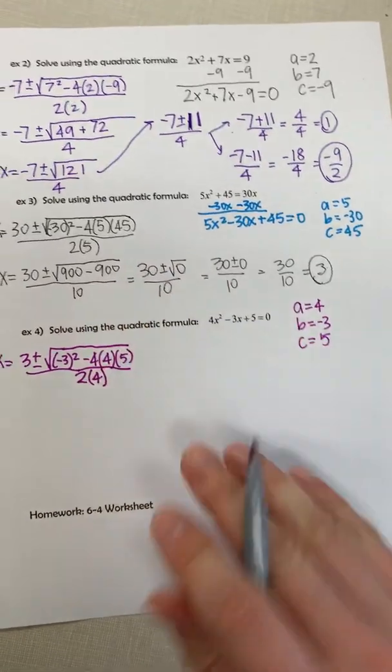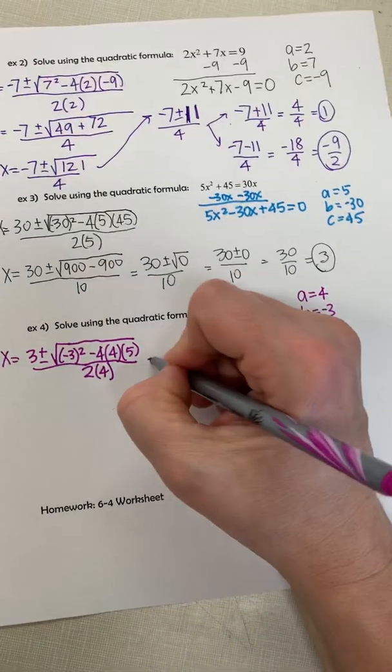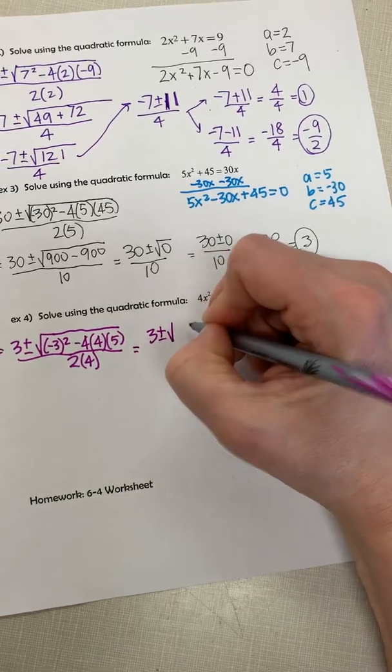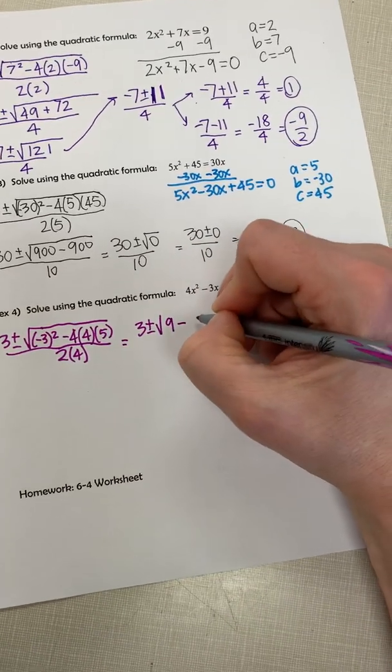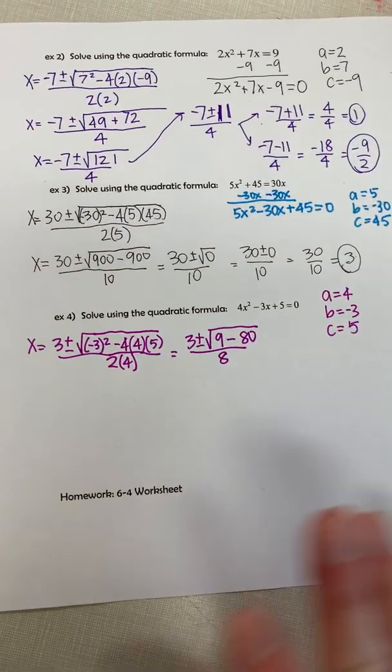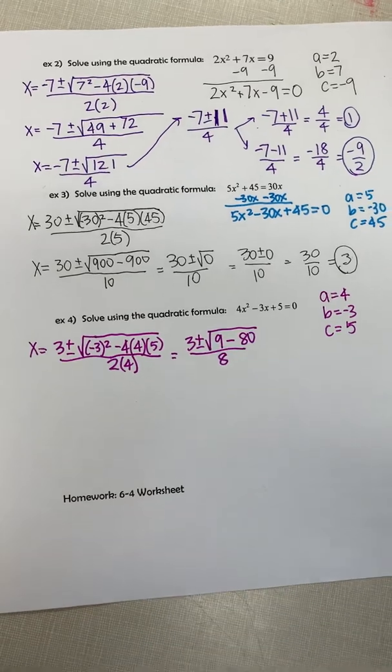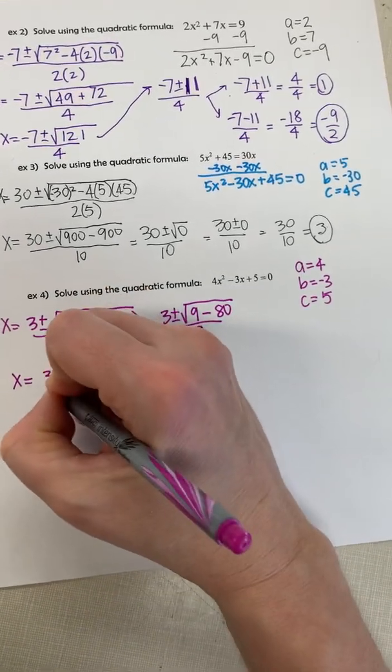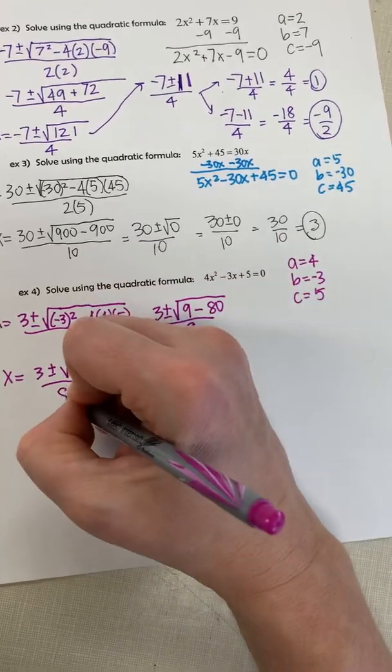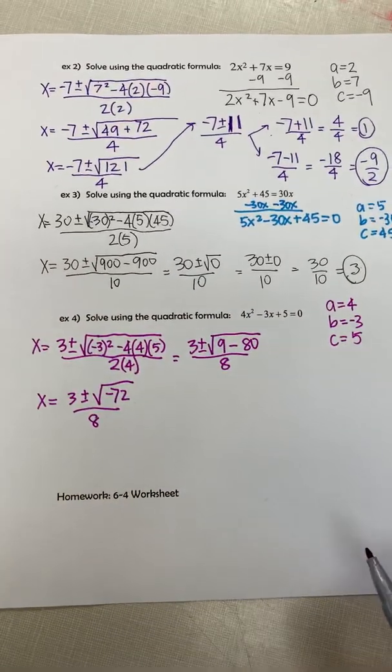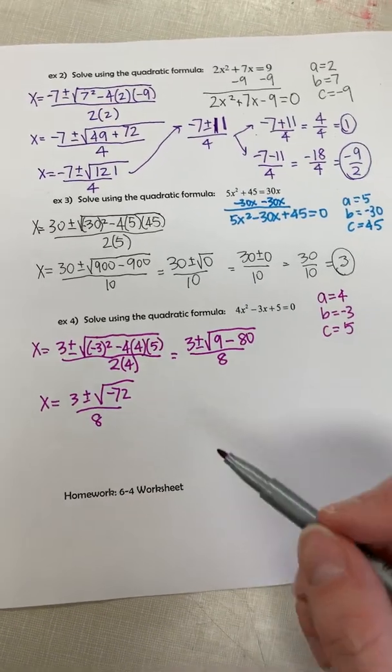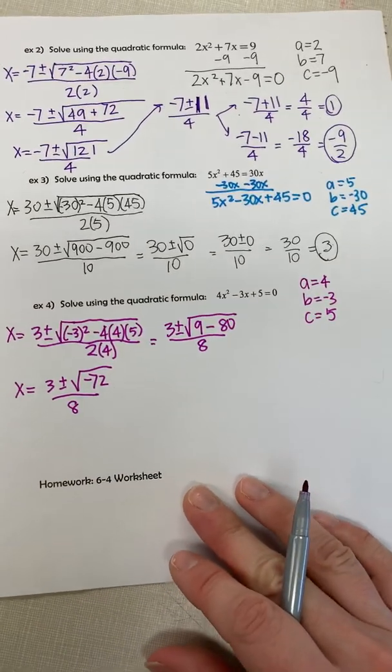So I get 3 plus or minus the square root. It's 9 minus 80, all over 8. Now you already might be realizing 9 minus 80 is going to be a negative number. I get negative 72. Now when we did this in algebra, we would have said oh, no solution. However, last class we learned we actually do have a solution. It just happens to be an imaginary solution.